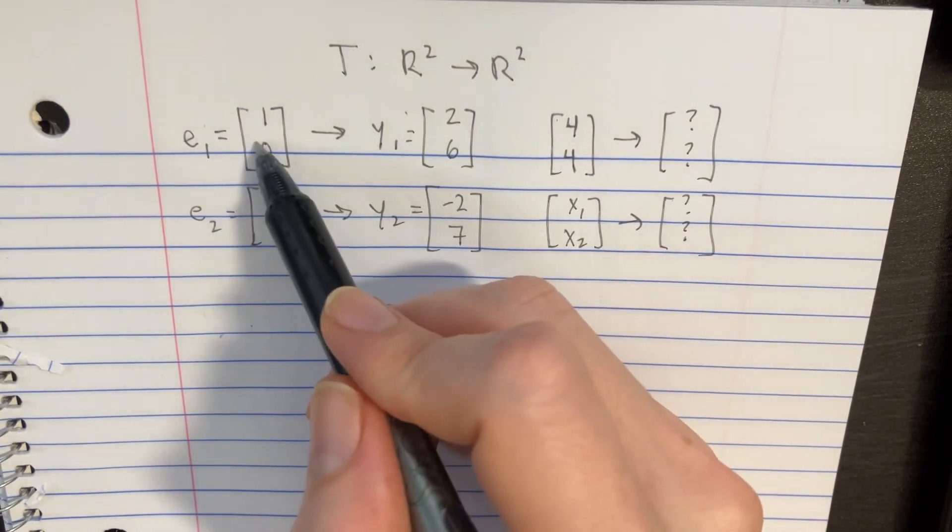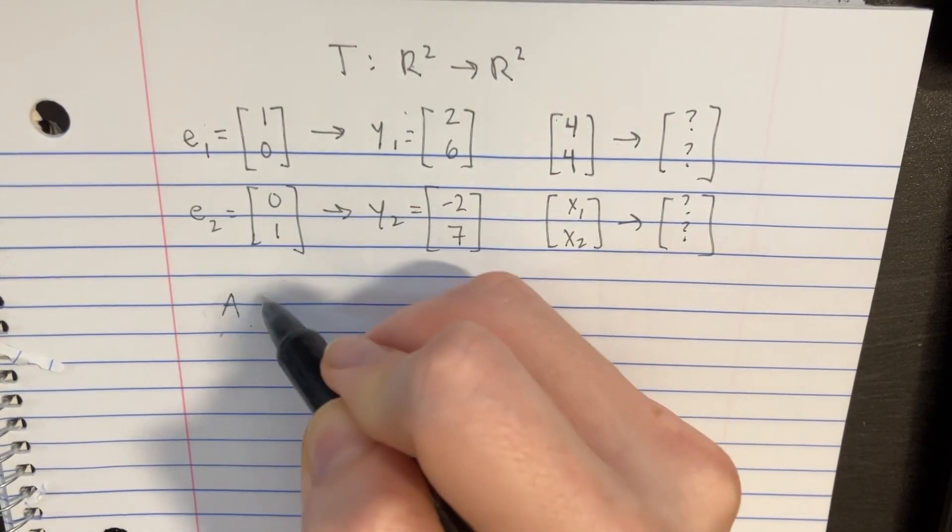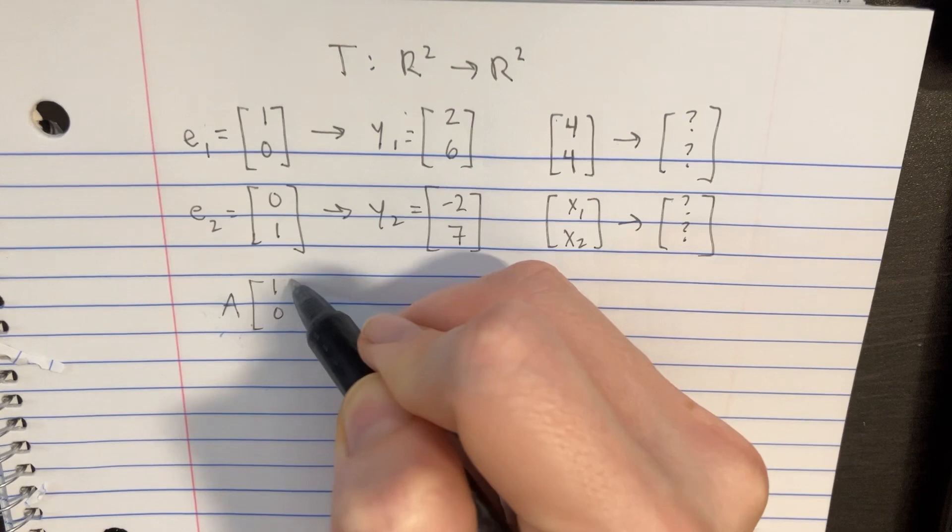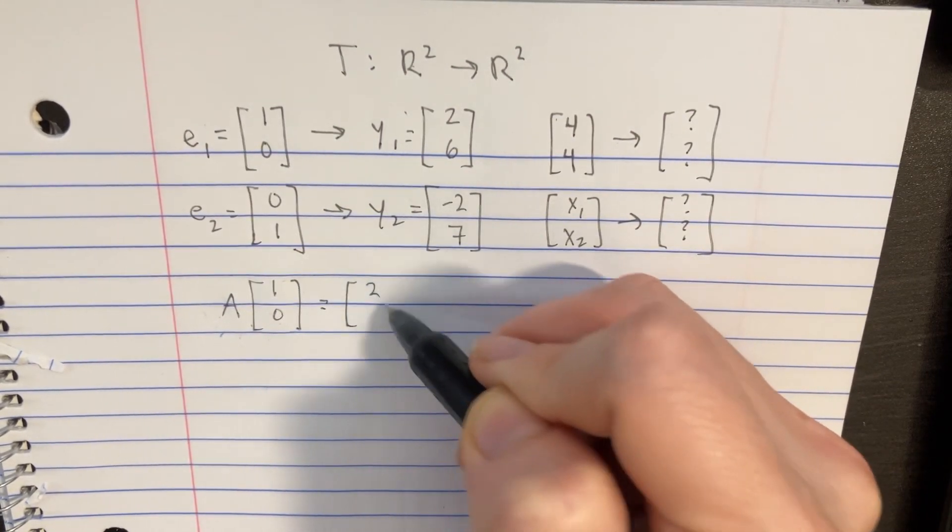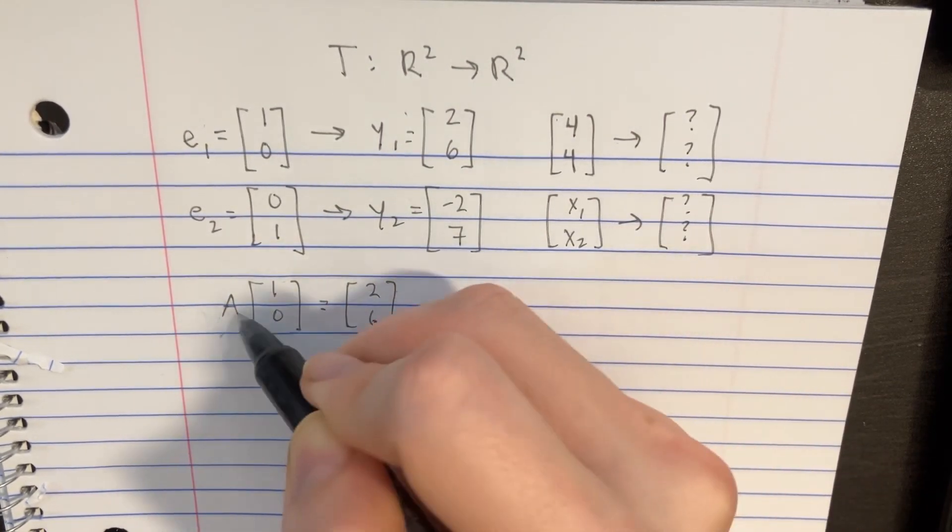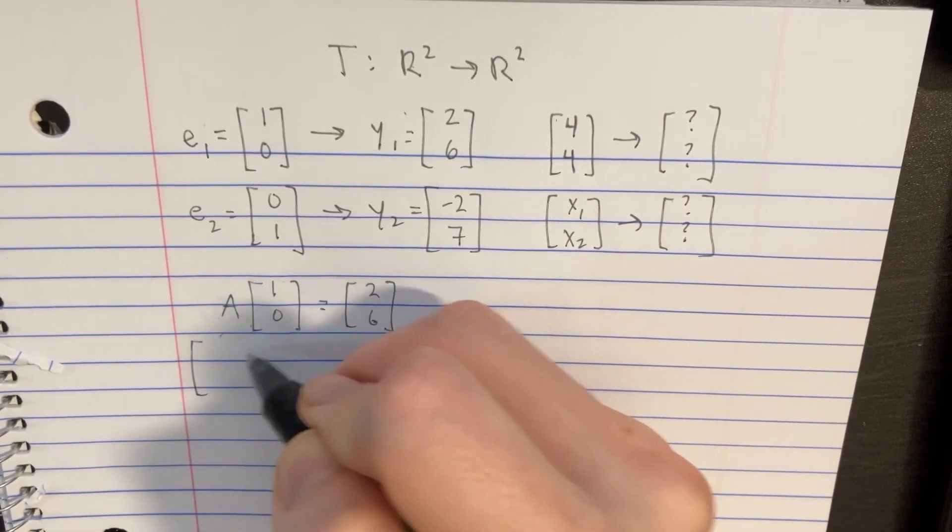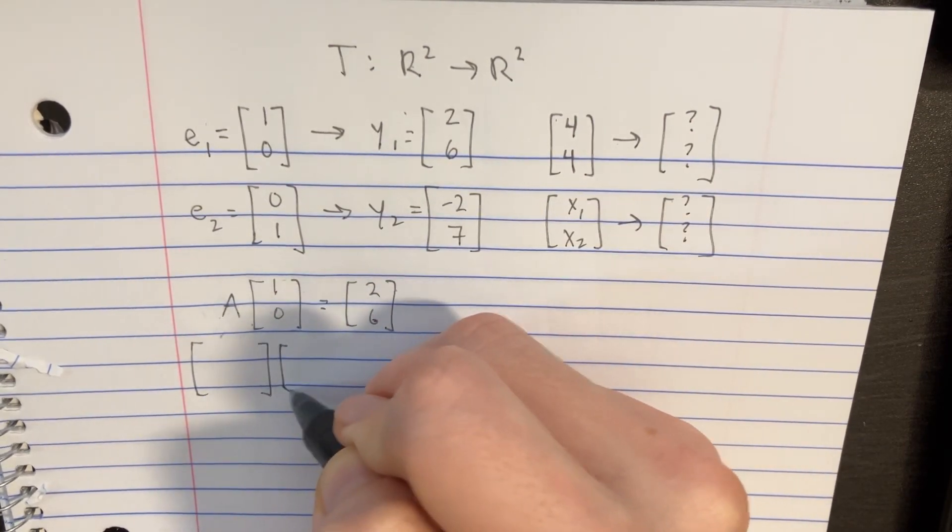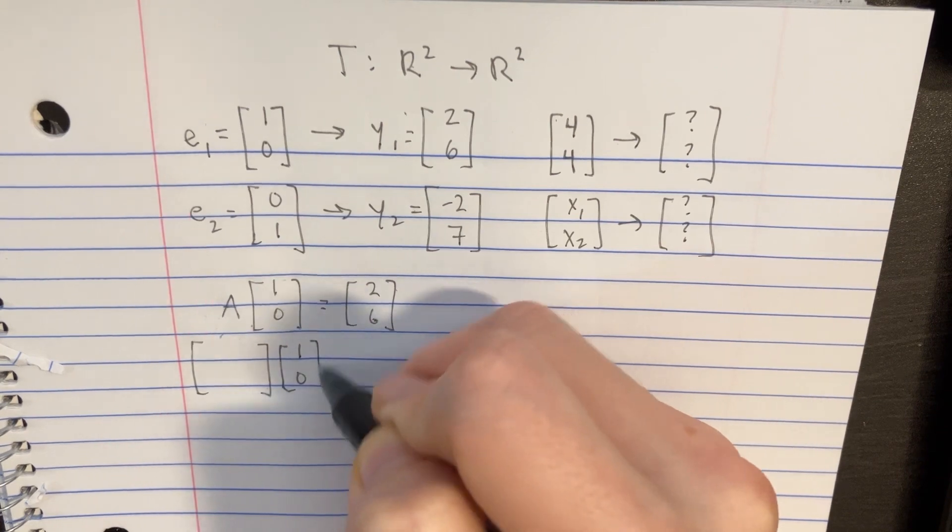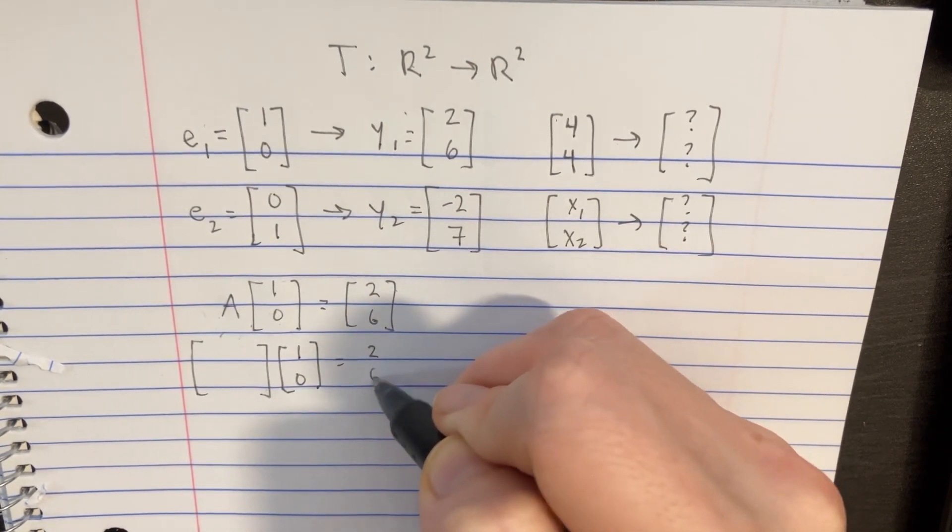Well, if we know this situation, then we can set up the A matrix times the E vector there, which is just going to be equal to 2, 6. In other words, we can say that there should have been some kind of matrix here, then when we put that in there, it'll equal 2, 6.